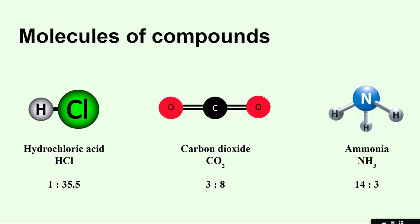When you simplify that ratio for CO₂, you get 3 is to 8. This means whether you take carbon dioxide gas from your home, school, another country, or another continent, the carbon dioxide molecule will always have this fixed ratio because the number of atoms is always fixed in a molecule. You will never see that carbon dioxide is made up of one carbon but three oxygen atoms — that is not possible. The number of atoms is fixed and the mass is also fixed. Similarly for ammonia, the mass of nitrogen is 14 and for three hydrogen atoms it is 3, so the ratio is 14 is to 3. This is the law of constant proportion — whenever atoms combine to form a molecule, they always combine in a fixed ratio by mass.